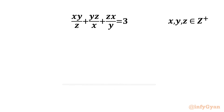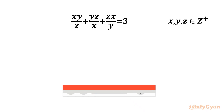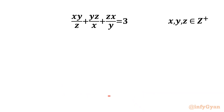Welcome to Infigyan. Today in this video, we have one very interesting question from algebra. We have one Diophantine equation: xy/z + yz/x + zx/y = 3. Given that x, y, z are positive integers, we have to find all possible triplets.